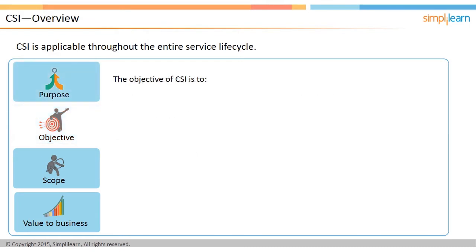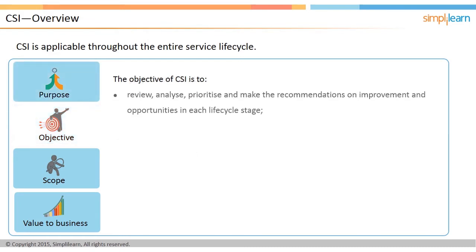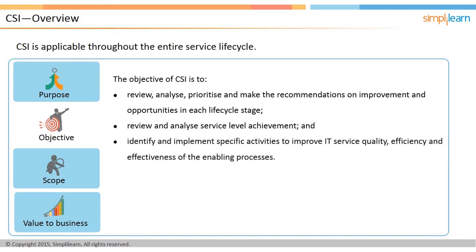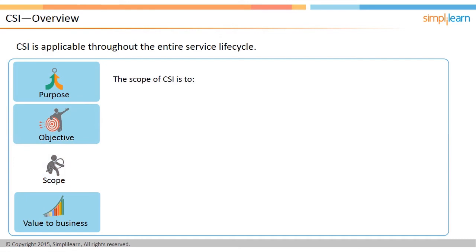The objective of CSI is to review, analyze, prioritize, and make recommendations for improvement and opportunities in each life cycle stage. Review and analyze service level achievement. Identify and implement specific activities to improve IT service quality, efficiency, and effectiveness of the enabling processes. The scope of CSI is to maintain the overall health of IT service management, including dependent services.